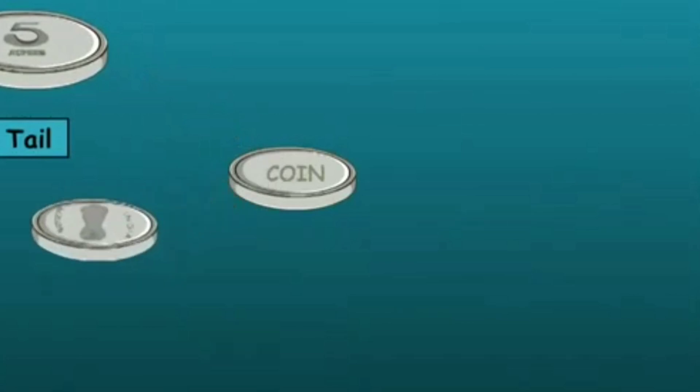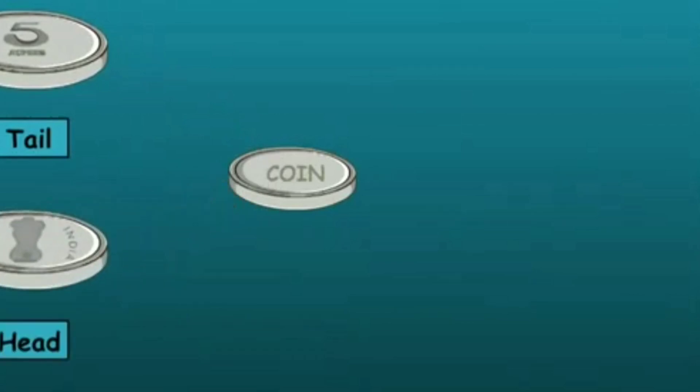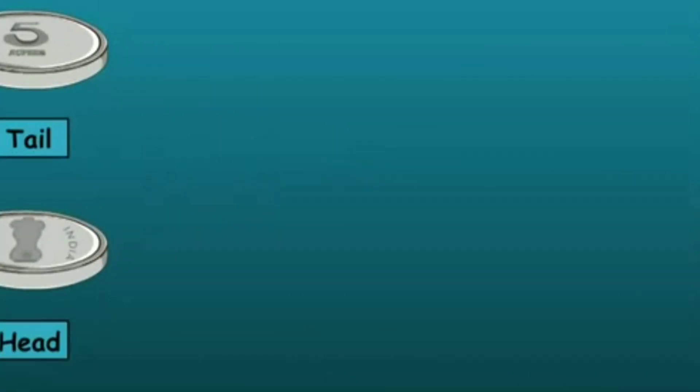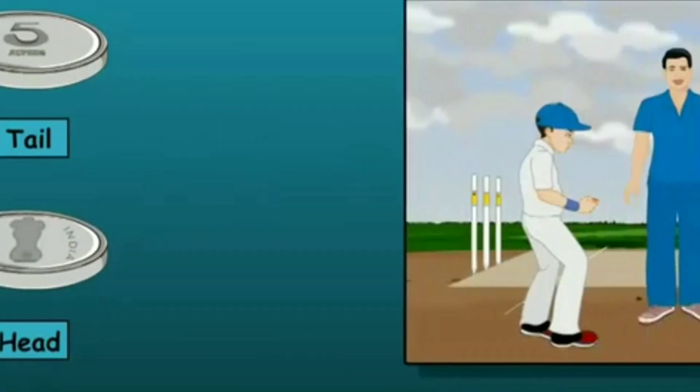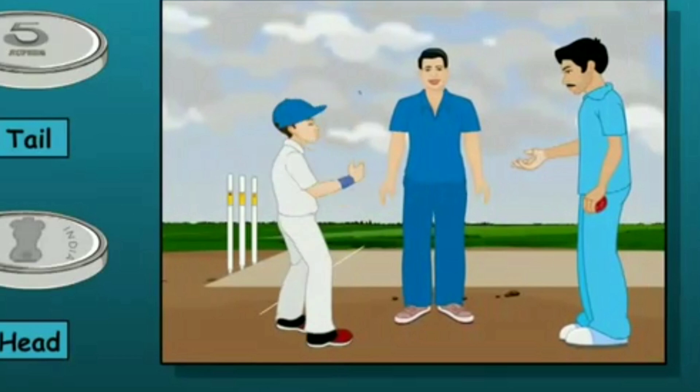Now, consider the coin. It has two faces: tail and head. If you toss the coin, then it may be head or it may be tail.